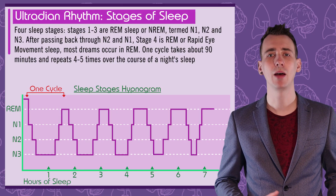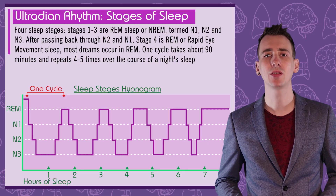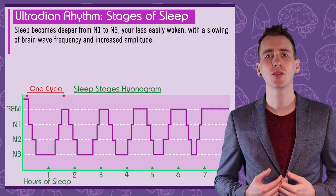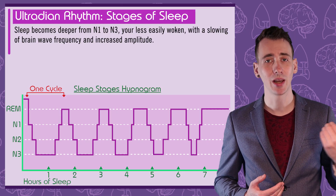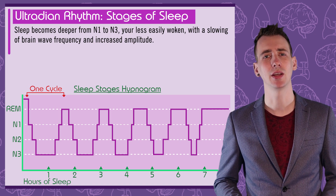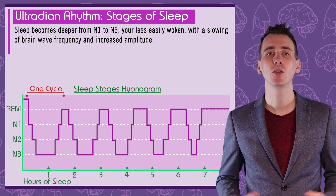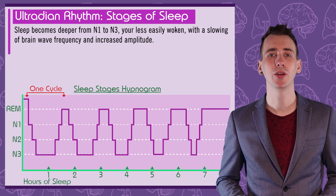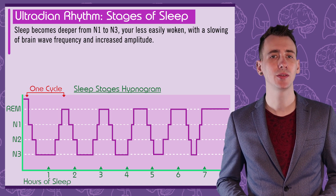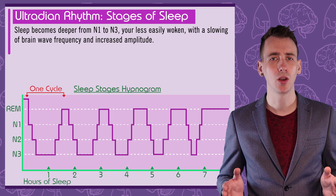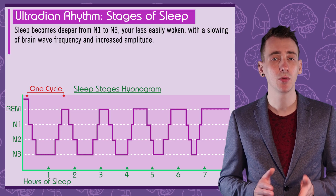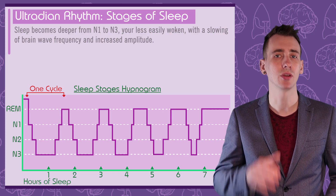Progressing from N1 to N3 sleep, we can describe this as moving from a light sleep to a deeper and deeper sleep. You're less easily woken and the brainwave patterns slow to a lower frequency but with a higher amplitude.